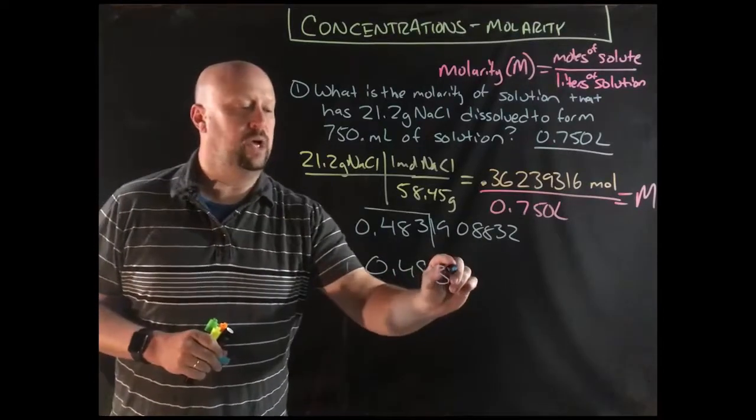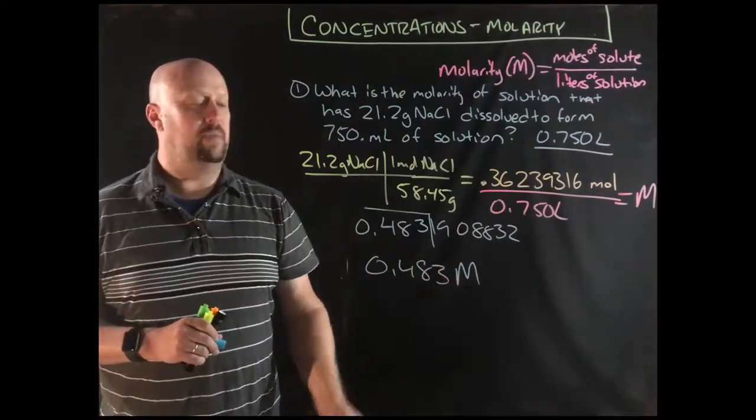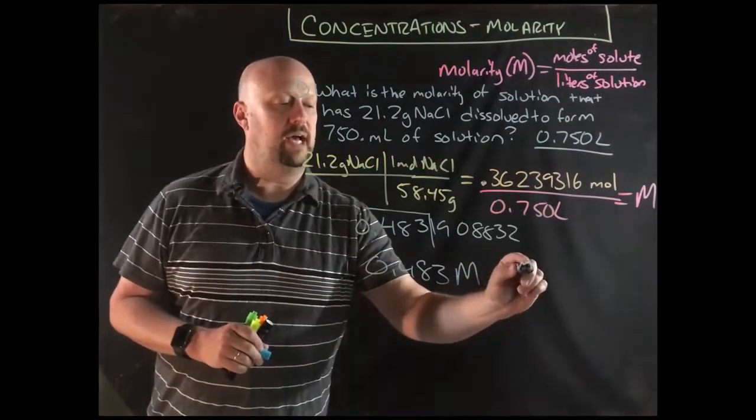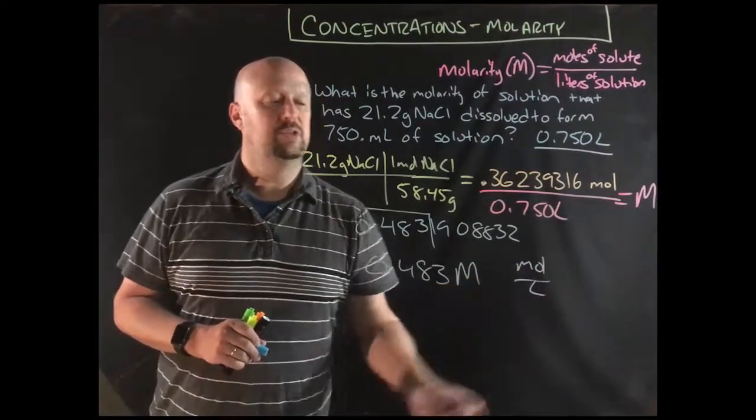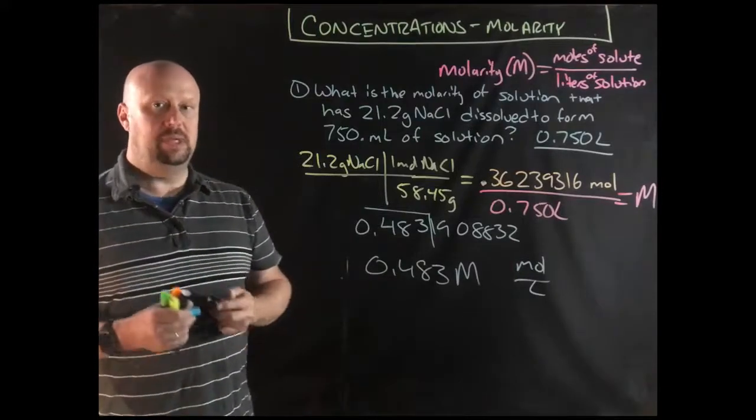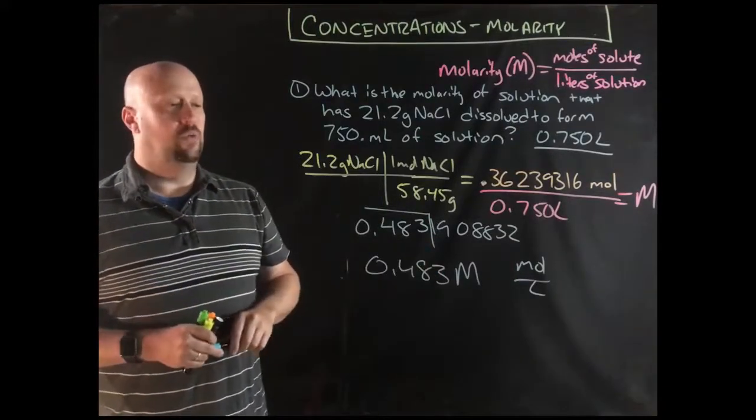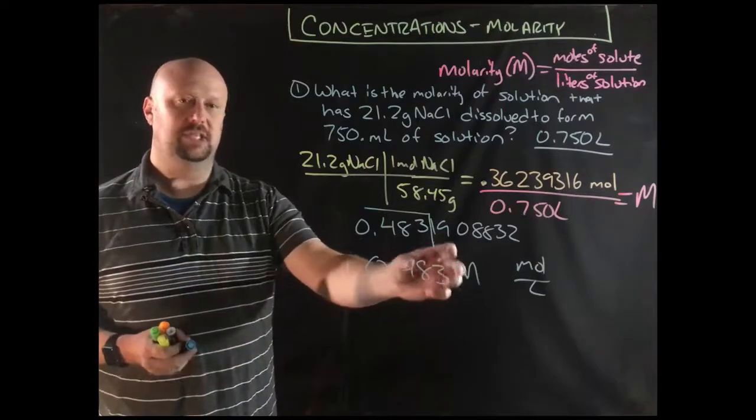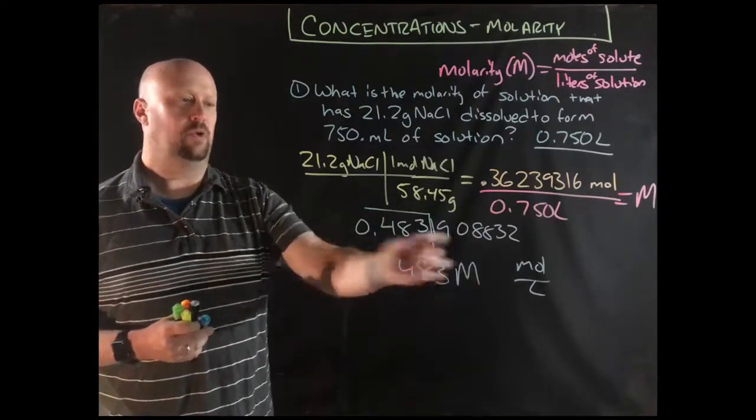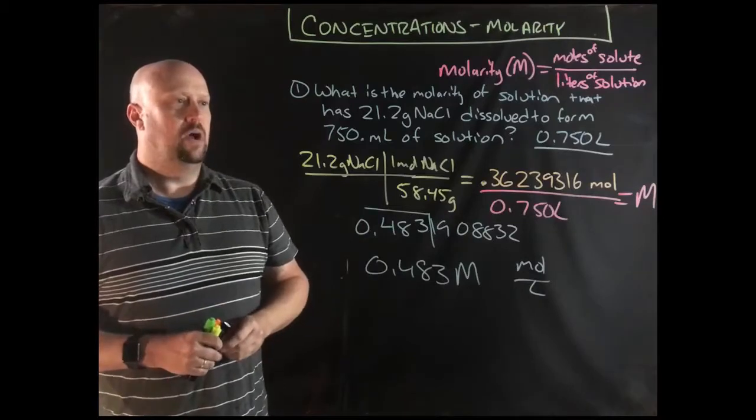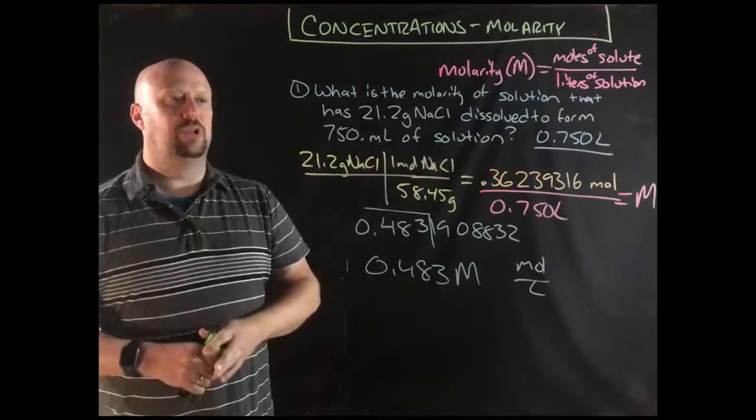You could write it in two ways. Molarity is capital M. You could also write it as moles per liter. Those mean the same thing. Molarity would probably be the more correct way because that's the way that you would see stuff labeled. If you went in the chemical cabinet, what you would probably see is a solution labeled with a capital M. That's molarity.